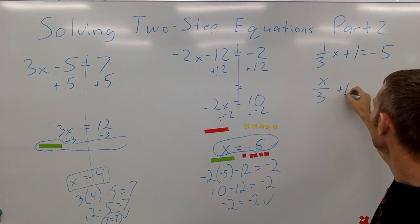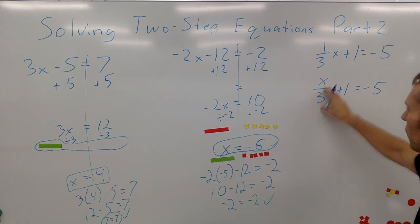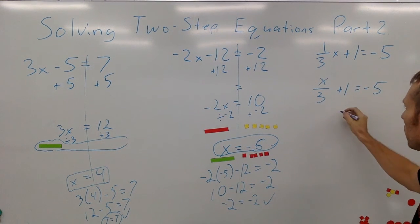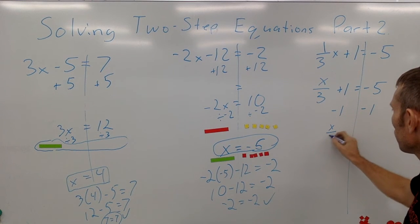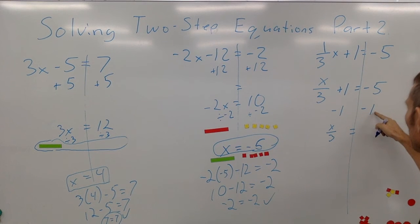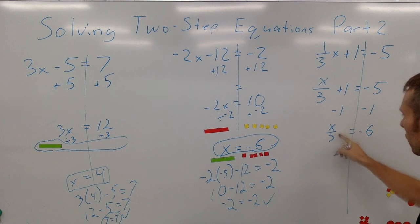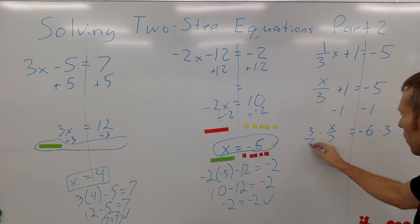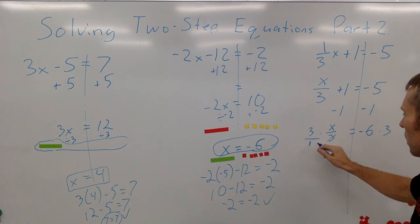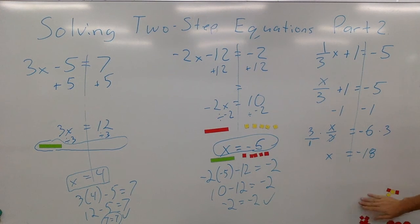We can write one-third x as x divided by 3 — they mean the same thing. So we have x divided by 3 plus 1 equals negative 5. X is being divided by 3 and then 1 is being added. To reverse that, we subtract 1 from both sides: minus 1 cancels the plus 1, leaving x divided by 3 equals negative 6. Then to undo dividing by 3, we multiply both sides by 3, and x equals negative 18.